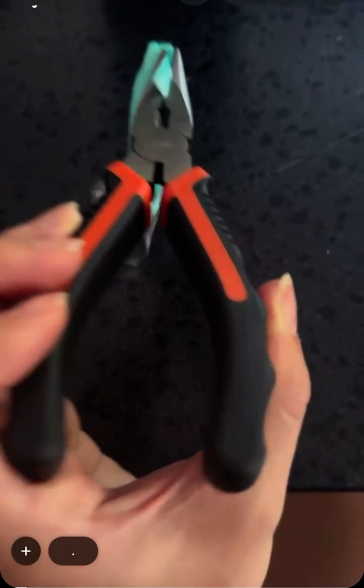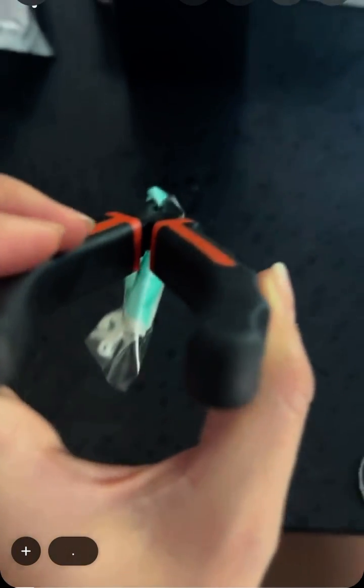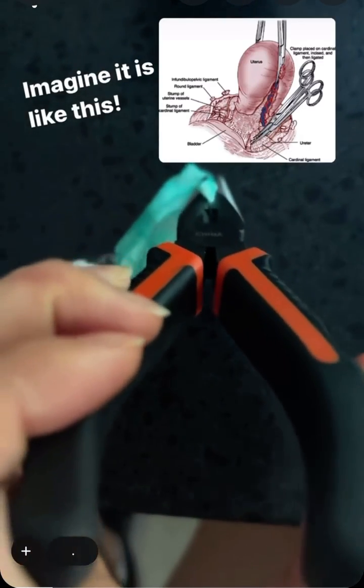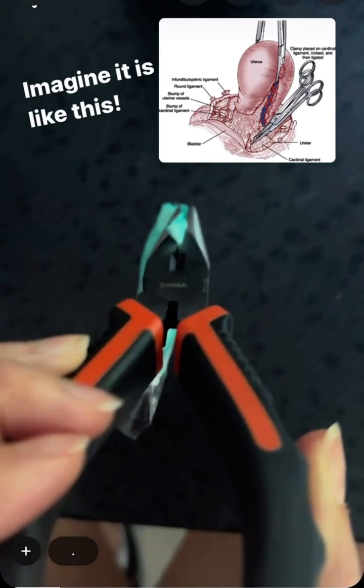Today I'm going to be using these pliers as a makeshift Zeppelin clamp. So pretend like this is a straight bite on your pedicle. You have your tissue here, you've already cut it, you're about to throw your stitch on the pedicle.